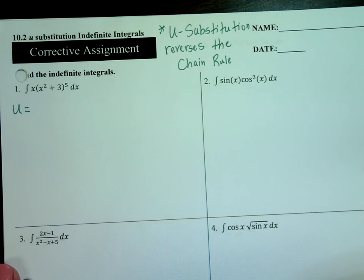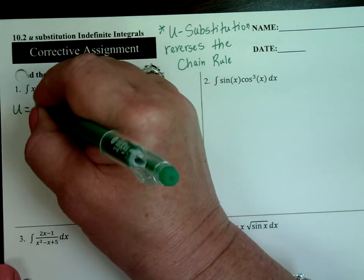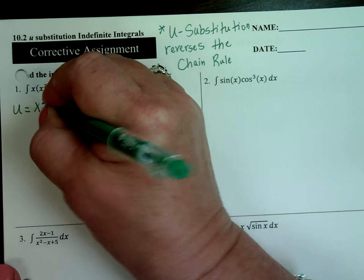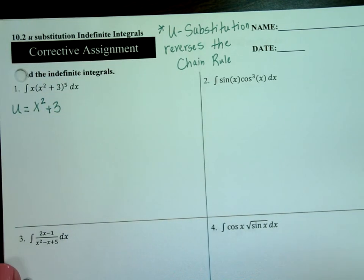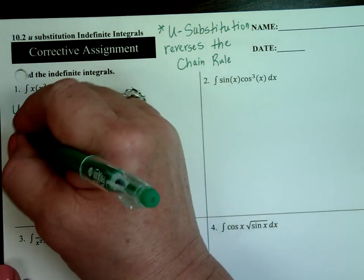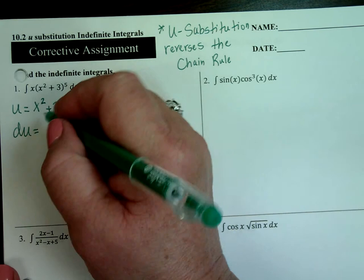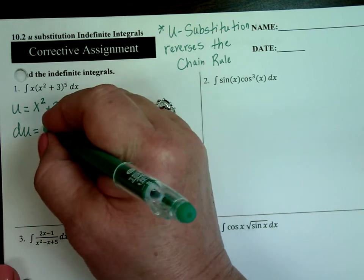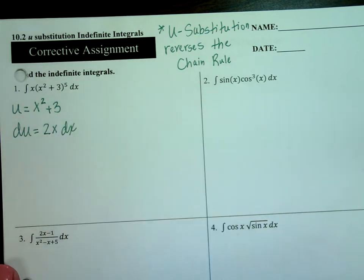Any guesses as to what you would make your u? The x squared plus 3 — right. Whatever's in the parentheses is a clue. x squared plus 3. Then what you're going to do is take the derivative of it — you want to know what du is. du would be the derivative of x squared, so it's 2x dx. Don't forget the dx.